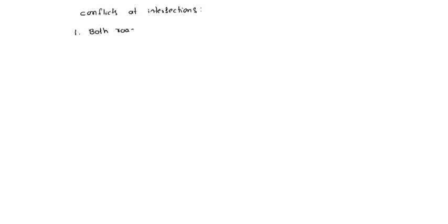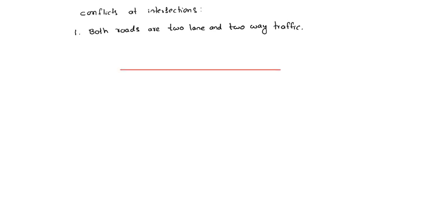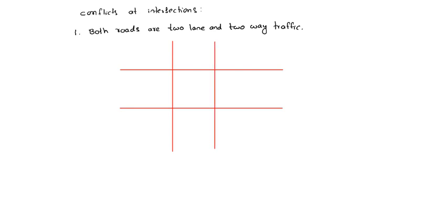Case one: both roads are two-lane and two-way traffic. We will draw like this — this is lane one, this is lane two, and in the other direction lane one and lane two. Directions are like this, two-way traffic.